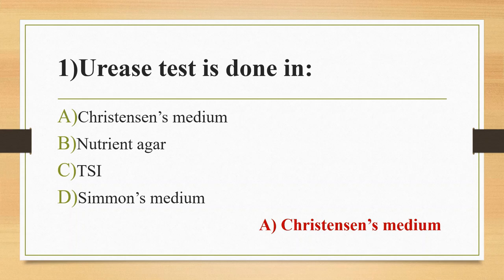Rapid urease positive organisms turn the entire medium pink within 4 hours, like Helicobacter pylori. Klebsiella and Proteus give a urease positive result within 24 hours.